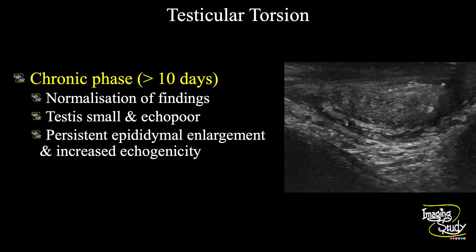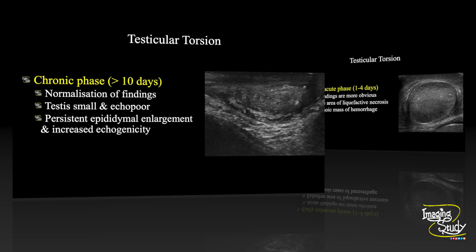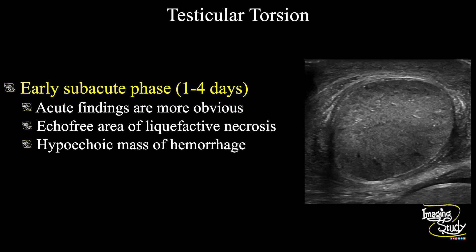In the chronic phase, the features will get normalized. The testes will get small and echopoor, and the epididymis may show persistent enlargement with increased echogenicity. Our case was of the early sub-acute phase.